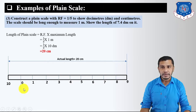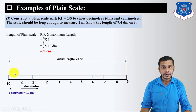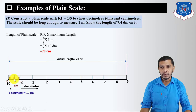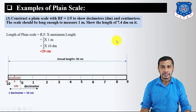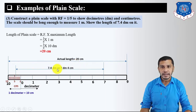The main scale represents decimeters and the subscale represents centimeters. Since 1 decimeter = 10 centimeters, divide the first main division into 10 subdivisions: 0, 1, 2, 3, 4, 5, 6, 7, 8, 9, 10. To show 7.4 decimeters: from the main scale take 7, and from the subscale take 4 centimeters (1, 2, 3, 4). This length represents 7.4 decimeters.